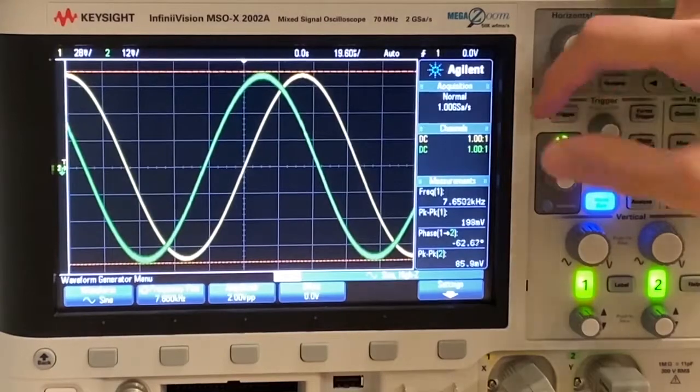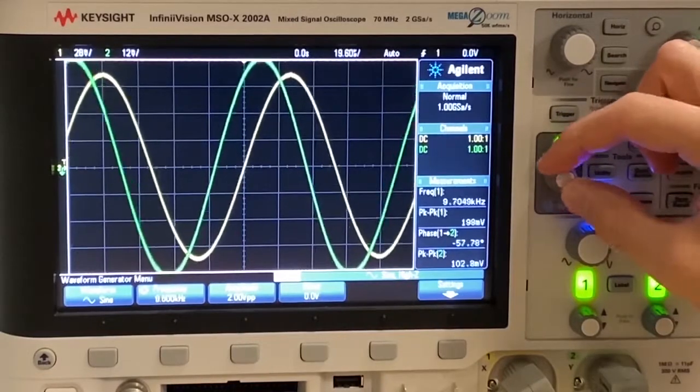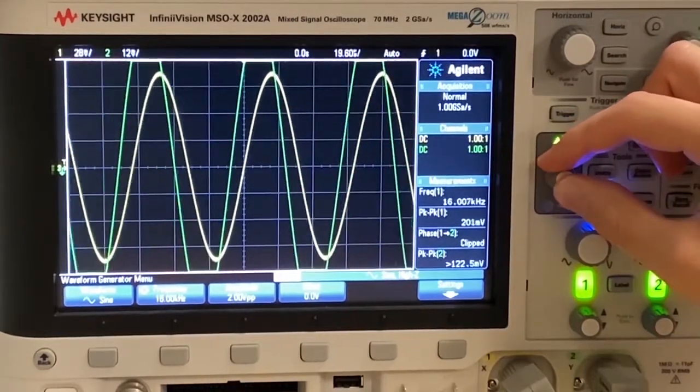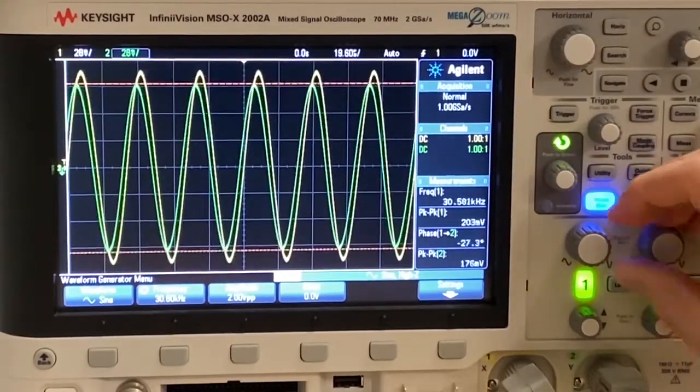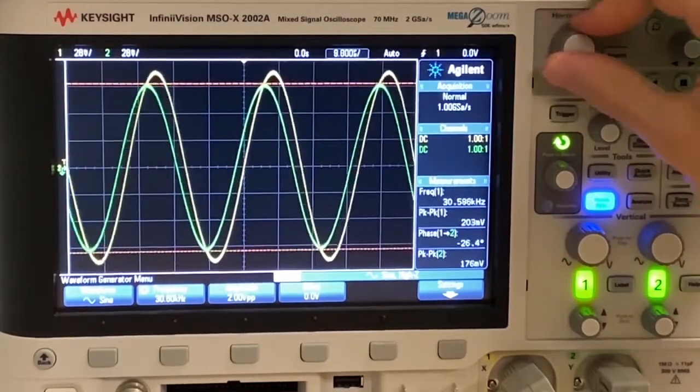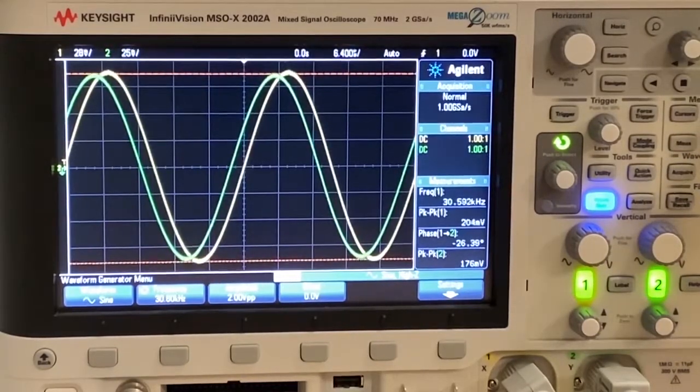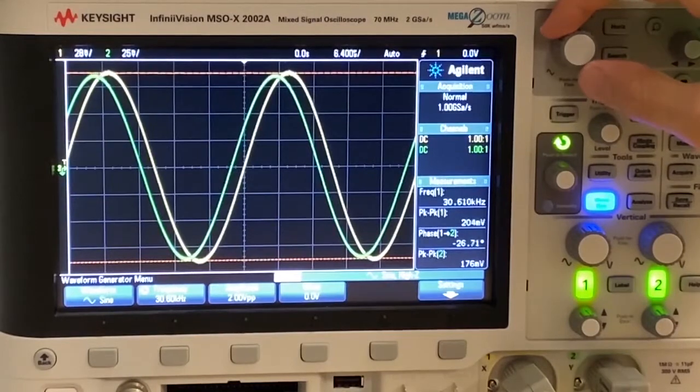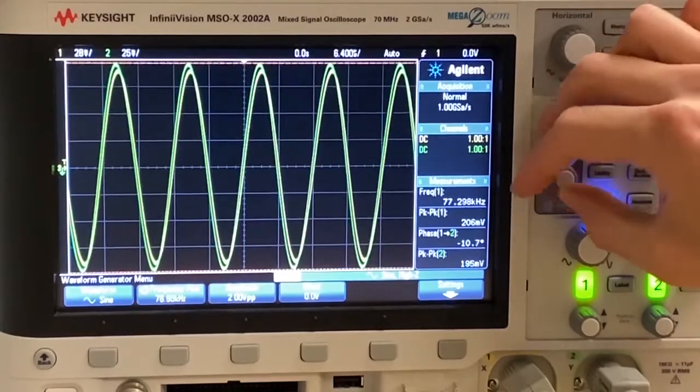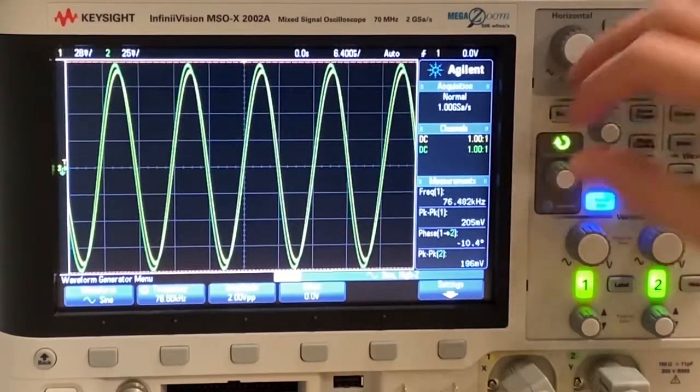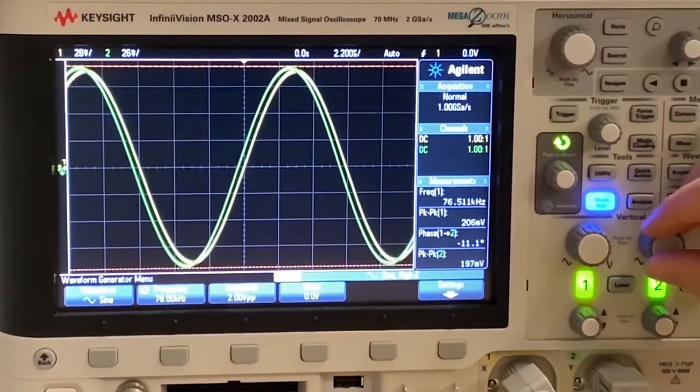We already did our root frequency, which was 15.3. So double that. We're going to go to 30.6 kilohertz. Again, zoom out on the vertical. And zoom in on the horizontal. And there's a pretty good measurement of our peak-to-peak. 5 times is going to be the 76.5. So there's 76. And there's 76.5. Zoom out a little bit on the green and zoom in horizontally. And we have a value. Let's make these two look the same.